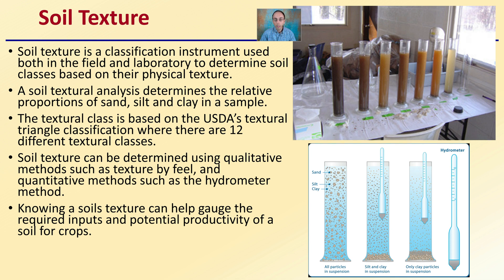Knowing the soil's texture can help gauge the required inputs and potential productivity of a soil for crops. This shows the sand, silt, and clay particles in suspension, allowing them to settle out using a hydrometer to get an idea of exactly what levels it's reading. A reading is taken early on, then they let it sit for about two hours and take another reading, comparing those two readings. If you want to see this in action, I have a path of soil through a soil test lab where they'll show you this exact process.